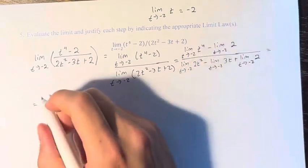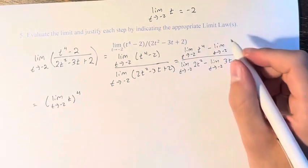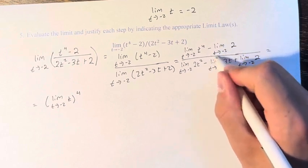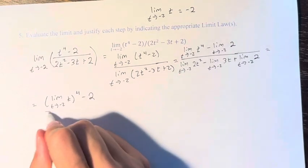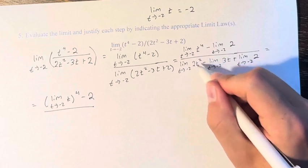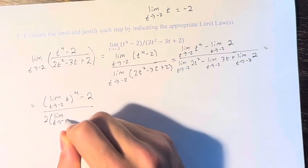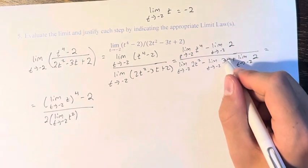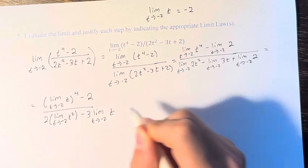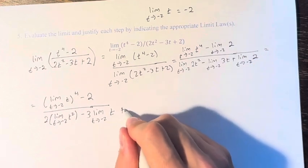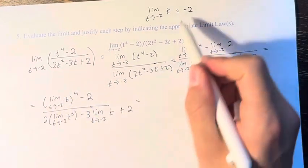The limit of t to the 4th is equal to the limit of t, raised to the 4th. The limit of the constant 2, no matter what value we plug in for t, 2 is just going to equal 2 no matter what, so we just say minus 2. The limit of 2t squared is equal to 2 times the limit of t squared, and again, 2 is just equal to 2. The limit of t, as we said earlier, was negative 2.